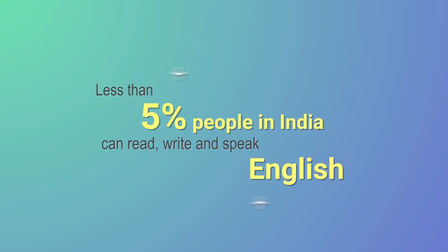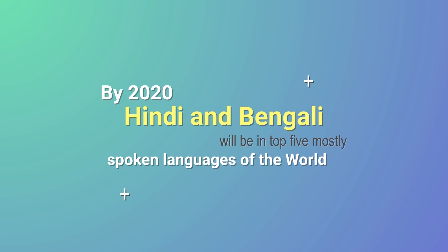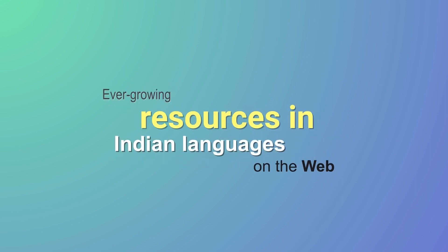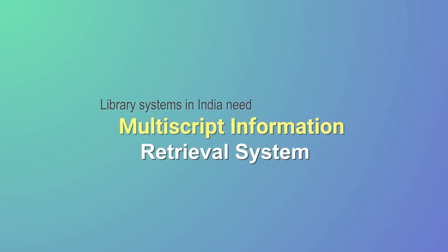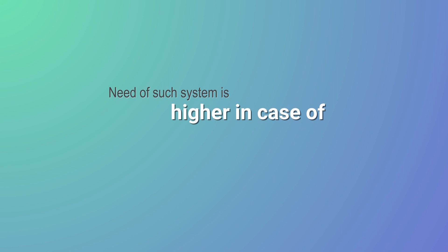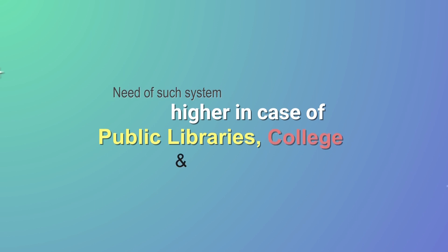Less than 5 percent of people in India can read, write, and speak in English. By 2020, Hindi and Bengali will be within the top 5 most spoken languages of the world, even bringing resources in Indian languages from the world. Library systems need to be compatible with multilingual information retrieval technology, and this need is much higher in rural-based public libraries, college, and school libraries.